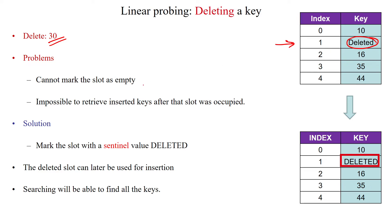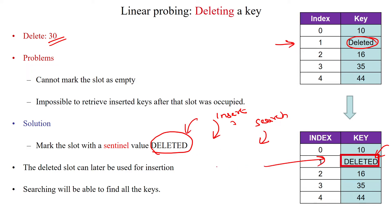Once you delete an element, you should not leave that position as free. Instead, you have to overwrite that place with the value 'deleted'. This is called a sentinel value. You have to mark it as the sentinel value 'deleted'. When inserting or searching data, if you see the word 'deleted' at any index, it is treated as an empty or free slot. We can use that deleted slot to store a new value in the hash table.